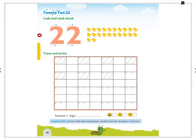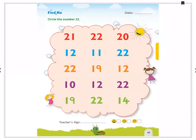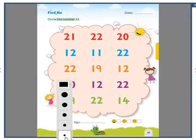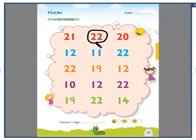Yes. For every number we are getting one activity. Yes. Turn your page to page number 47. Yeah. The same thing we did for 21. But now you should not circle 21. You have to circle 22. You have to circle the number 2, 2, 22. So you have to circle the number 22. You have to search in all the boxes and you have to identify the number 22.